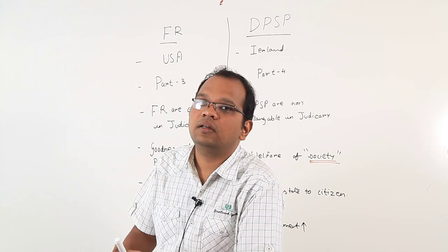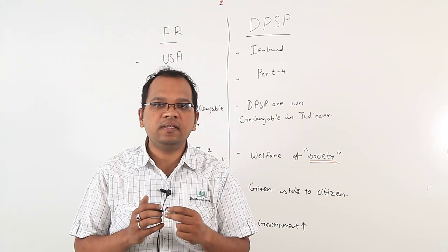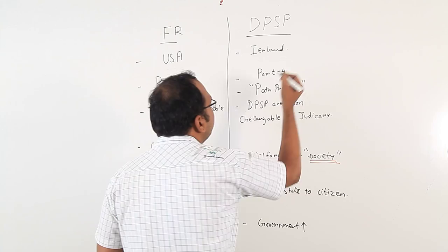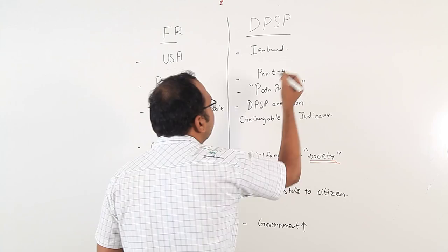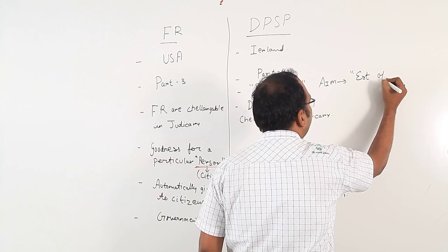DPSP is also called the path provider. What is the basic aim of DPSP? Establishment of welfare state. So this is our comparison of fundamental rights and DPSP for now. Thank you.